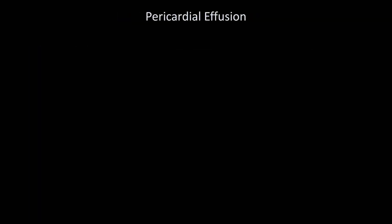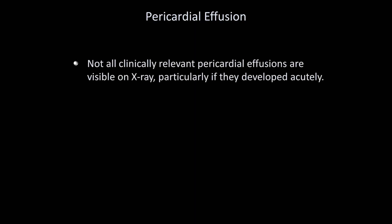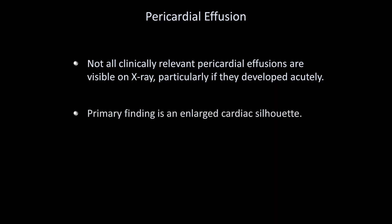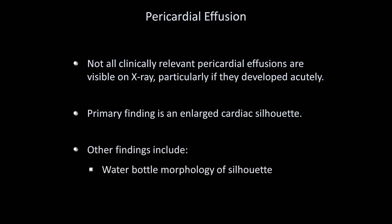Moving on to pericardial effusions: not all clinically relevant effusions are visible on x-ray, particularly if they developed acutely. That's because pericardial tamponade — a condition where diastolic cardiac filling is impaired due to high intrapericardial pressure — is dependent on both the volume of fluid within the pericardium and the speed with which the fluid accumulated. The primary finding of an effusion is an enlarged cardiac silhouette. Other findings include what is frequently called the water bottle morphology of the silhouette, as well as the Oreo cookie sign.